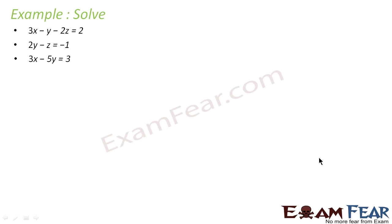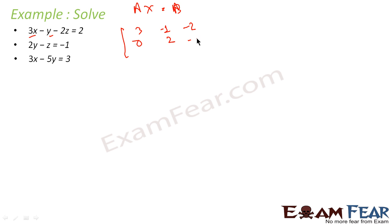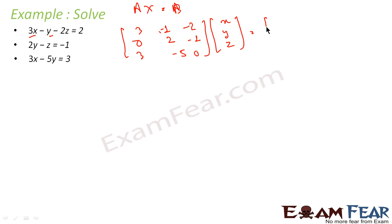Let's write this in the form AX = B, where A will be the coefficient matrix: coefficient of x is 3, y is -1, z is -2; coefficient of x is 0, y is 2, z is -1; x is 3, y is -5, z is 0. X will be the column vector [x, y, z] and B will be [2, -1, 3, -1].